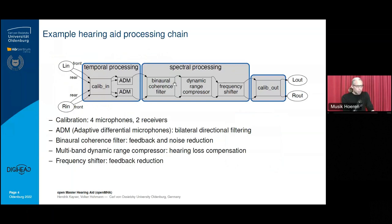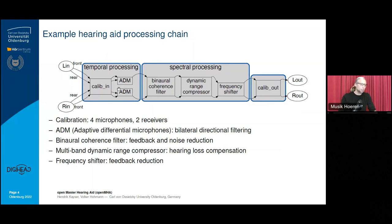This is an example hearing aid processing chain, just one of the examples available in the software, to give you an idea of how a flowchart of what you can build looks like. We have four microphone inputs — two microphones on each side, like an actual hearing aid — followed by a calibration stage to build a bridge between the hardware component and the internal calibration of the software. There are two temporal processing blocks: adaptive differential microphones for bilateral directional filtering. Then there is a block of spectral processing with binaural processing for noise reduction and hearing loss compensation, a dynamic range compressor, and a frequency shifter for feedback reduction. This is a basic hearing aid processing chain which can be modified as required in a given study.